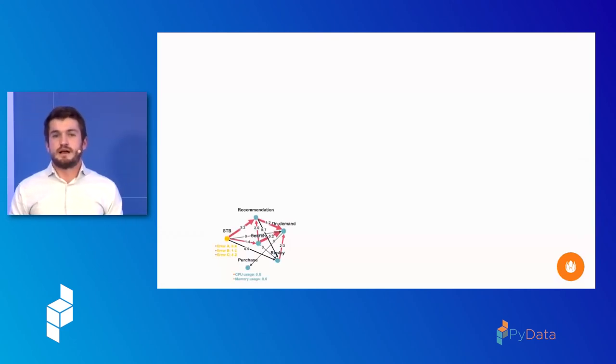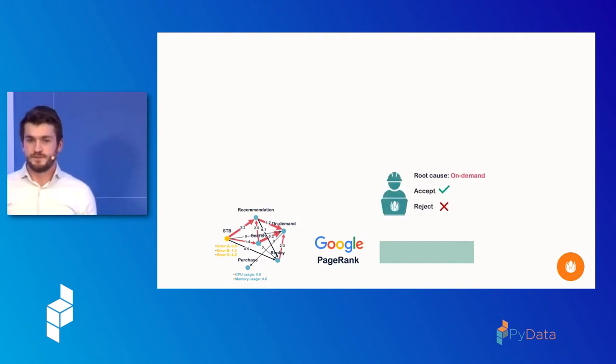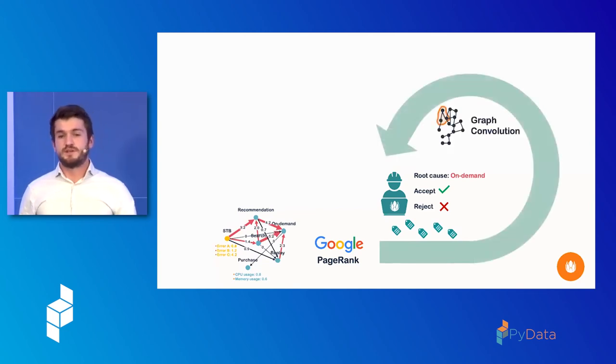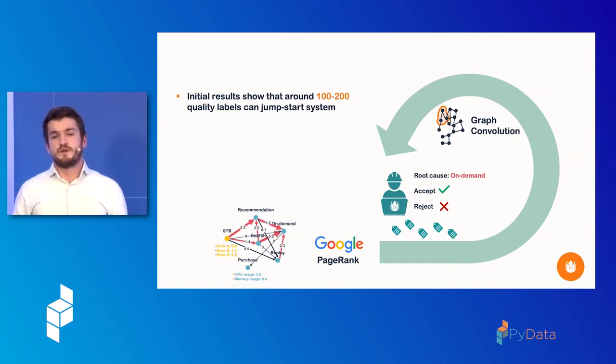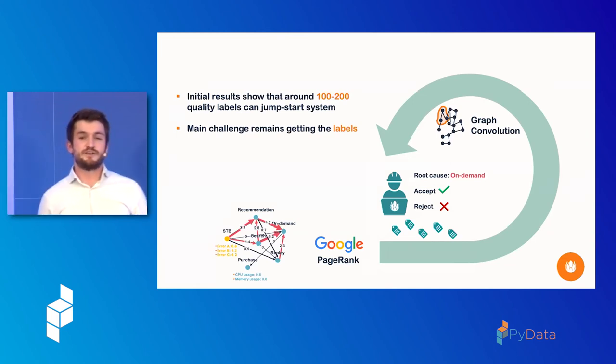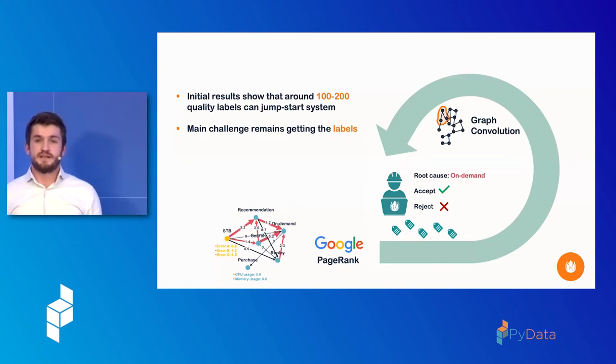So how could one implement this in practice? So maybe we start out with this Google PageRank algorithm to already have some unsupervised approach to at least start generating some labels. And then these labels can be validated by expert engineers, which of course then becomes a sort of feedback loop, where then we can take more advantage of diverse feature sets, maybe even time evolving information over time. Initial results show us that around 100 to 200 quality labels could help to jumpstart this system. And the main challenge we're facing right now is to actually start collecting these labels on a structural basis, because the engineers are of course very busy people.